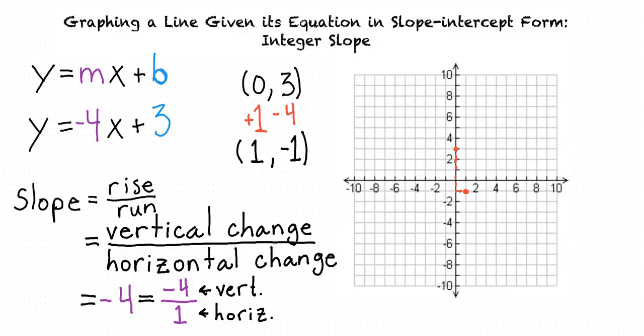Since this is a linear equation, meaning its graph is a straight line, we only need two points in order to graph it. If we connect these two points with a line and extend that line in both directions, we will have graphed the line represented by this equation.